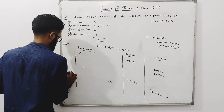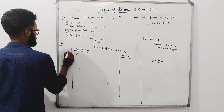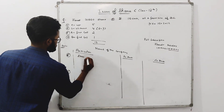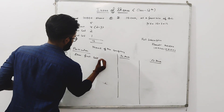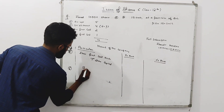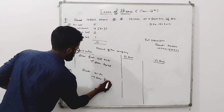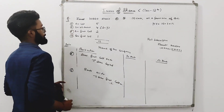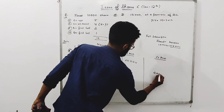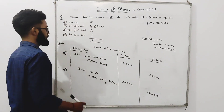Now the 5th and 6th entries — the first call entries. Share First Call Account Debit to Share Capital: 10,000 into 2 equals Rs. 20,000 on both sides. Then Bank Account Debit to Share First Call: Rs. 20,000, 20,000. Our first call set of entries is complete.